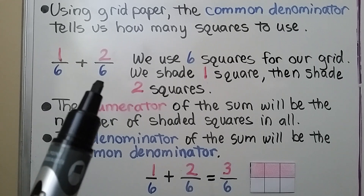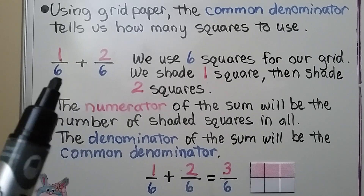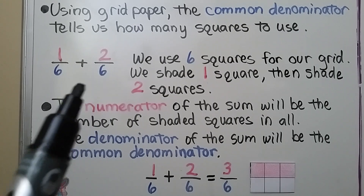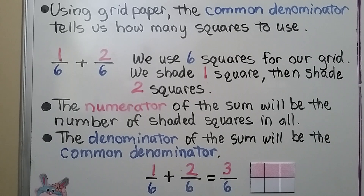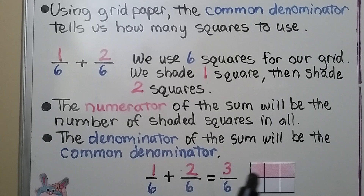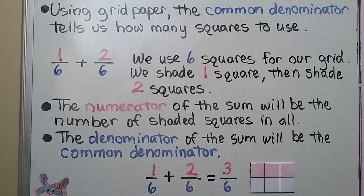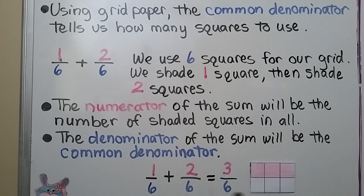Using grid paper, the common denominator tells us how many squares to use. We're adding one-sixth plus two-sixths, so there will be six squares in all. We shade in one square for one-sixth and two squares for two-sixths. The numerator of the sum will be the number of shaded squares — three — and the denominator will be the common denominator.